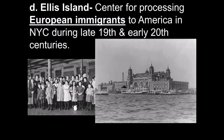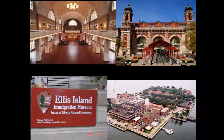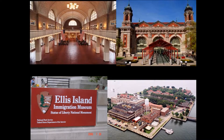Ellis Island was the center for processing all European immigrants coming to America through New York City during the 19th and early 20th centuries. It's no longer in service, but it existed to keep track of immigrants, make sure they weren't sick, and verify who they were. This is Ellis Island today — basically an island museum. Workers actually lived there in working dorms. People suspected of having terrible diseases like tuberculosis were put in quarantine, where they'd either get better or possibly die. They took communicable disease very seriously.